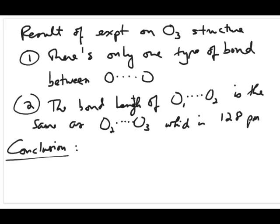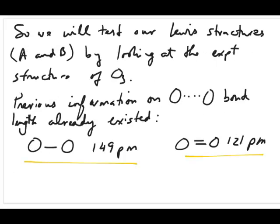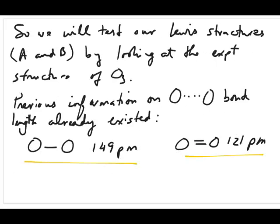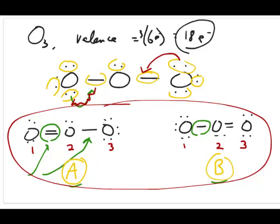When this experiment was done, the result was the following. It turns out that the experimental result is completely different than what we predicted. First, there's only one type of bond between the two oxygen atoms. It turns out that the bond length between oxygen 1 and oxygen 2, and between oxygen 2 and oxygen 3, is exactly the same — 128 picometers. This bond length is neither single nor double, but somewhere in between. The only conclusion we can draw is that neither structure A nor B represents reality.